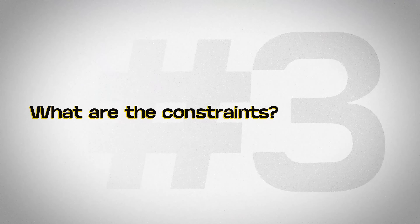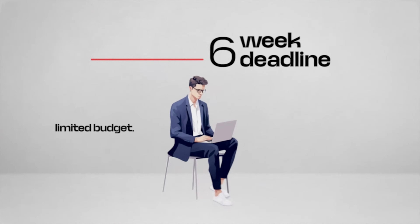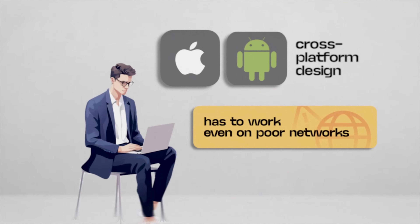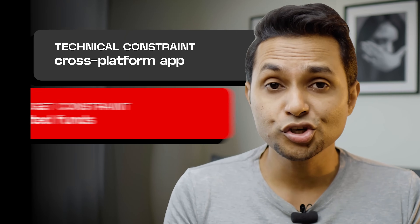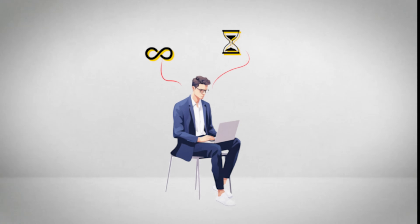Question number three: what are the constraints? Just like life is not a bed of roses, your work isn't either — situations will never be as straightforward as you may assume from mock projects. There will be a lot of constraints and challenges. Imagine you're designing a mobile app with a tight six-week deadline and a limited budget. The client also wants you to work on both iOS and Android, so you need to think about a cross-platform design. On top of that, users may have slow internet connections, so the app needs to work even on poor networks. These technical, budget, and user-related constraints guide your design choices. By understanding these limitations from the start, you can avoid wasting time on unnecessary features or complicated designs, keeping the project on track and within budget while still meeting user needs.